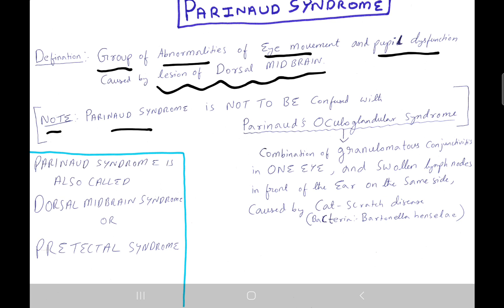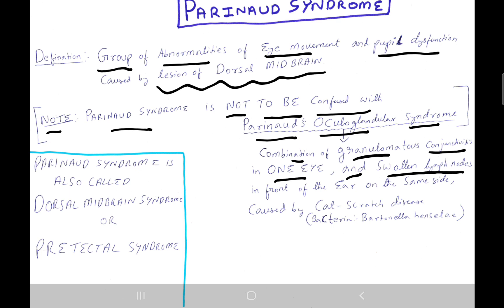Note: Parinaud syndrome is not to be confused with Parinaud's oculoglandular syndrome. Parinaud's oculoglandular syndrome is a combination of granulomatous conjunctivitis in one eye and swollen lymph nodes in front of the ear on the same side, caused by cat scratch disease, which is caused by the bacterium Bartonella henselae.